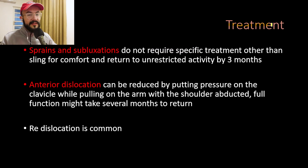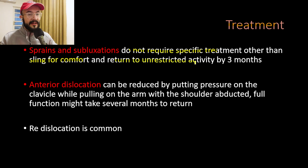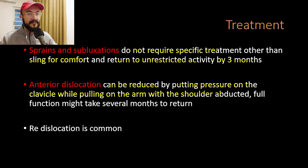Now let's talk about treatment. SC joint sprains and subluxations do not require specific treatment beyond giving the patient a sling for comfort, and they return to normal activity after three months. Regarding anterior dislocations, these can be reduced by putting pressure on the clavicle while pulling on the arm with the shoulder abducted. After reduction, the patient is given a figure-of-eight bandage around their shoulders, worn for three weeks. Full function may take several months to return, and re-dislocation is common.